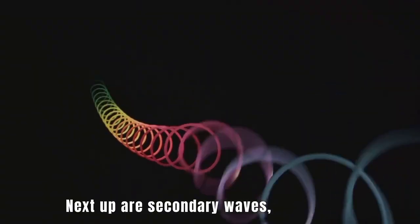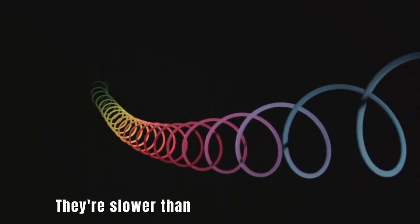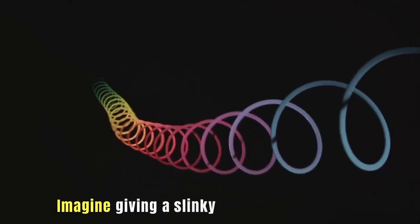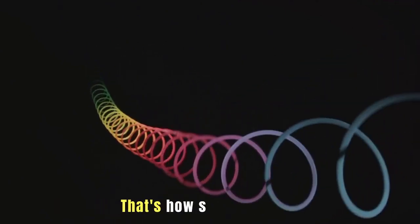Next up are secondary waves, or S waves. They're slower than P waves, and they cause particles to move perpendicular to the wave direction. Imagine giving a slinky a side-to-side shake, that's how S waves move.